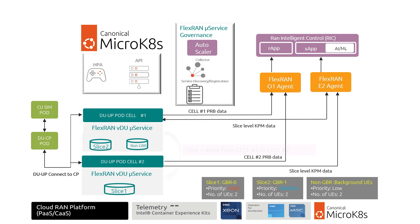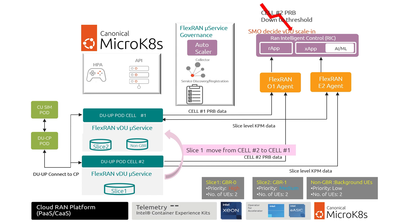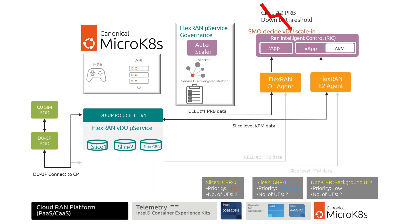As time goes on from busy hour to idle hour, traffic on both cell 1 and cell 2 decreases. SMO keeps monitoring cell 1 and cell 2 PRB utilization through the O1 interface. When it finds cell 2 PRB utilization is below the predefined cell load threshold for some time, and cell 1 also has resources to process those traffic loads, it makes the decision to deactivate cell 2 to save cost. Before cell 2 shuts down, SMO triggers traffic steering to move Slice 1 traffic from cell 2 back to cell 1. After cell 2 UEs are cleared, SMO sends the policy to FlexRUN Microservice Governance Autoscaler and triggers the DU-UP port scale-in operation, shutting down cell 2.